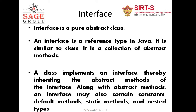The formal definition of interface is that an interface is a reference type in Java. It is similar to a class and it is a collection of abstract methods. A class implements an interface, thereby inheriting the abstract methods of the interface. An interface may also contain constants, default methods, static methods, and nested types. We will discuss this theory through an example of interface.